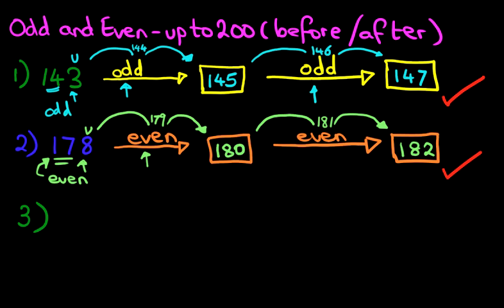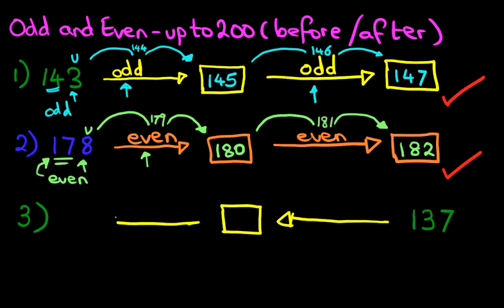We're going to move on to our third problem. This time we're going to write it on the right-hand side — you'll see this quite often in questions. Suppose we have the number 137. And this time the question is, we're going to go backwards and we have to work out the two even numbers before 137.